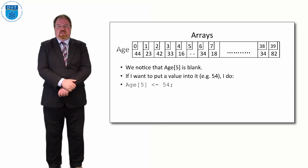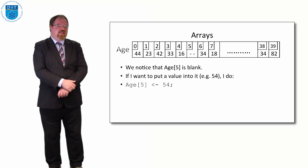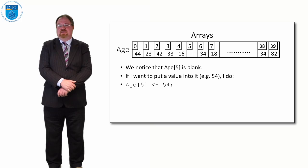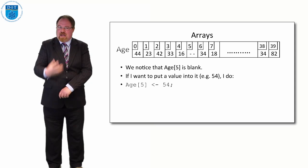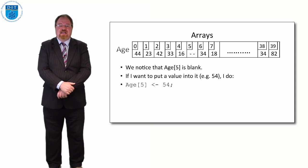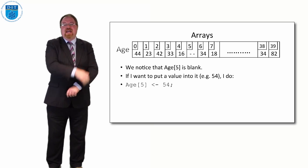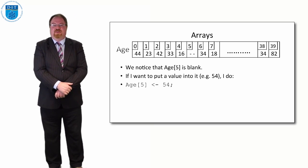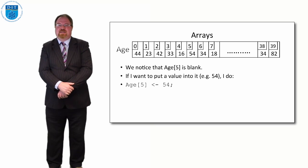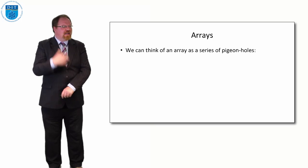Let's say we found out that the sixth student — age[5] — has an age of 54. All we need to do to assign that element its value is the same as assigning any variable: age[5] gets assigned 54, and that blank space will be filled in. Perfect.